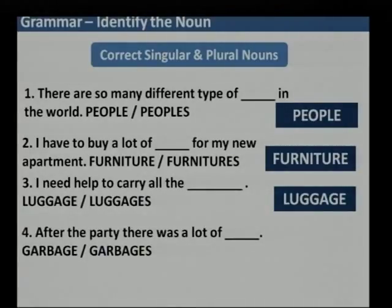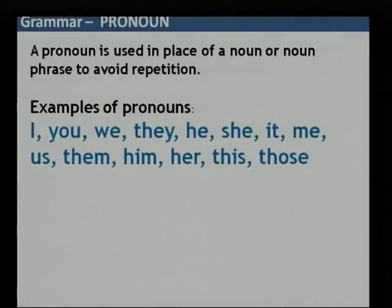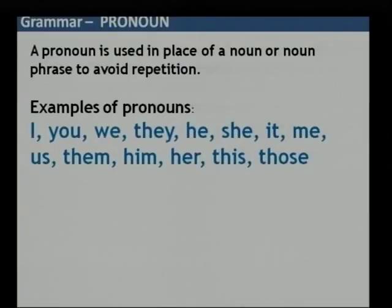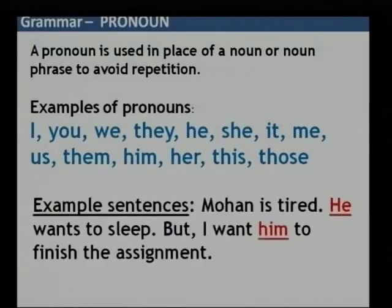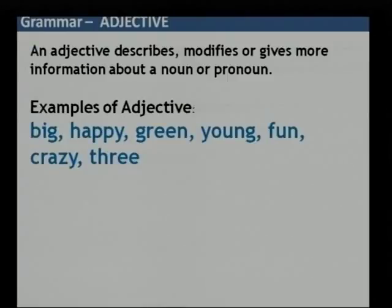We did a quick exercise on identifying singular and plural nouns. Remember, words like furniture, luggage, data, and garbage do not have a plural form — they are used in singular form only. Then we looked at pronouns. A pronoun is a substitute for a noun: I, you, we, they, he, she, it, me, us, them, him, her, this, those. We did a quick exercise on usage of pronouns.